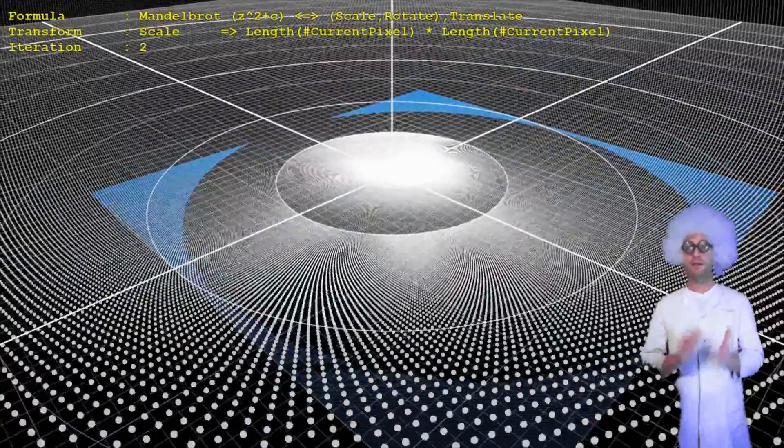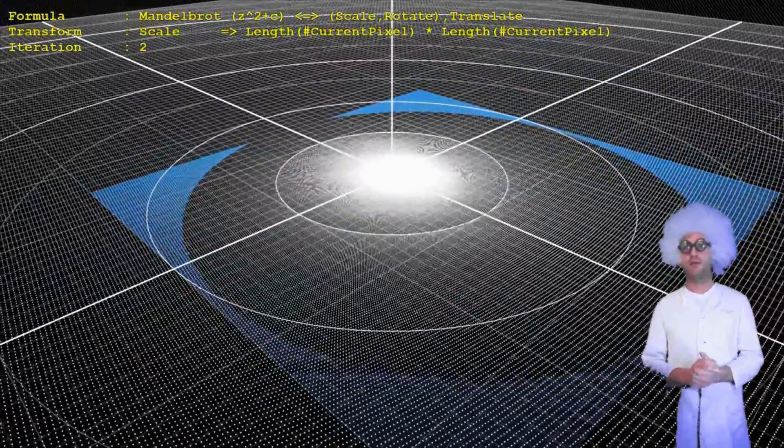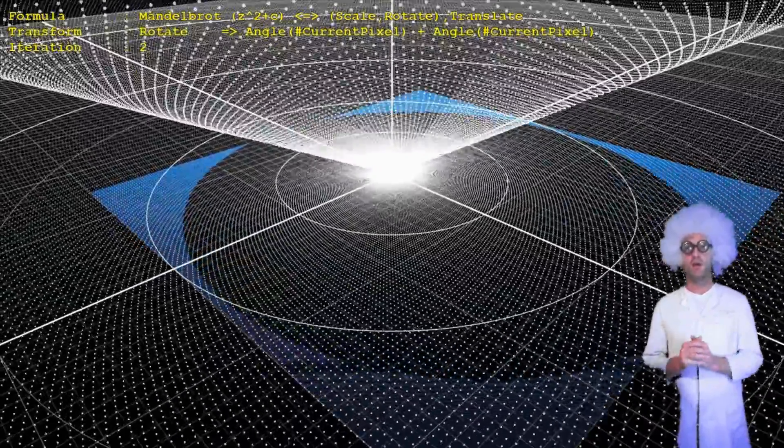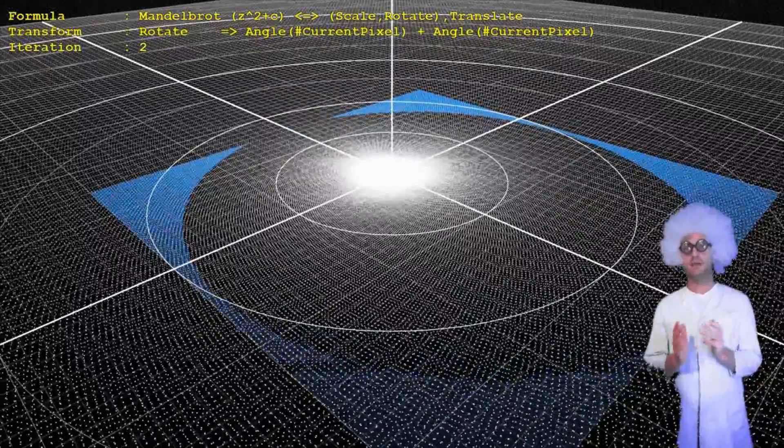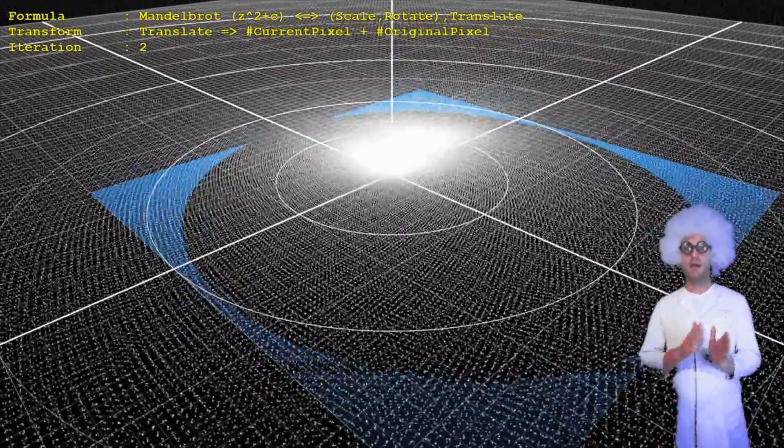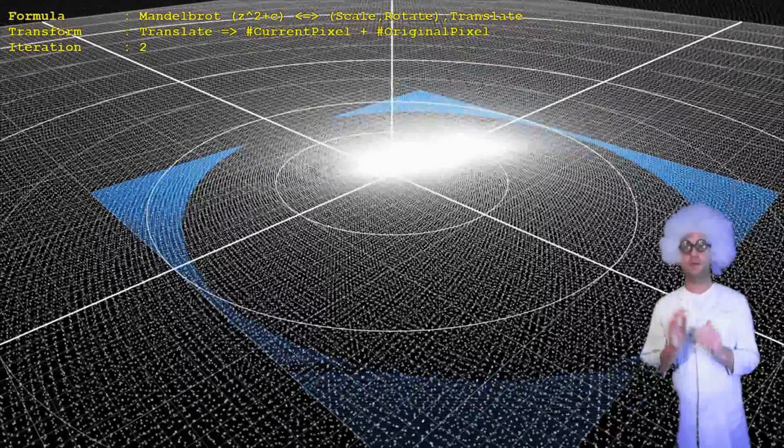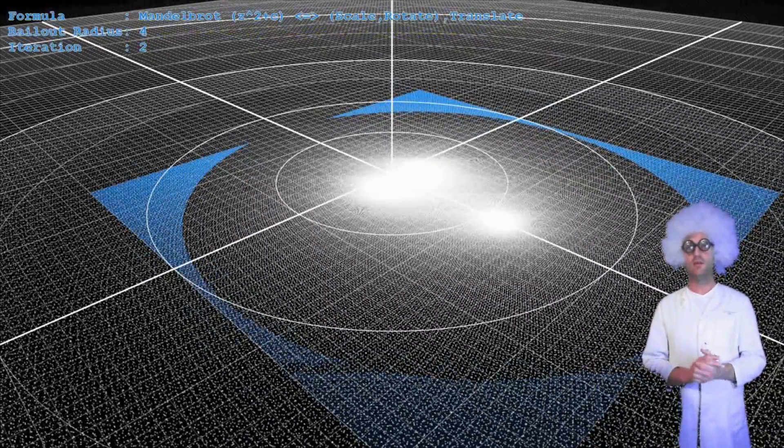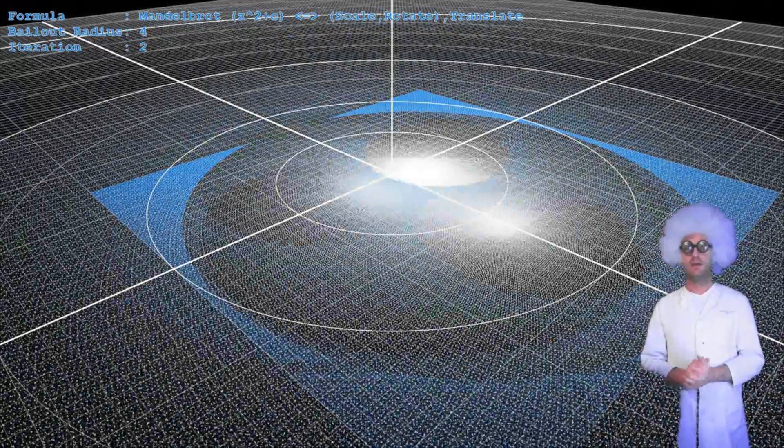The complex multiplication consists of a scaling and a rotational part. It does not matter in which order this happens. Either scale then rotate, or rotate first and scale then. The result is the same. We use scale first, rotate then, throughout this video.